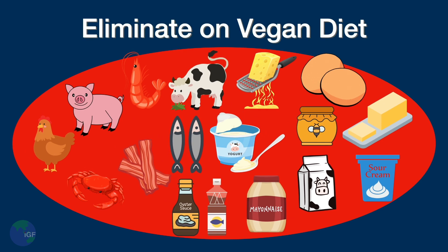A vegan diet combines a vegetarian diet with a dairy-free diet and excludes animal products such as eggs and honey. A common term for the vegan diet is plant-based. Out of all the diets we've covered, vegan diets eliminate more food than the others.